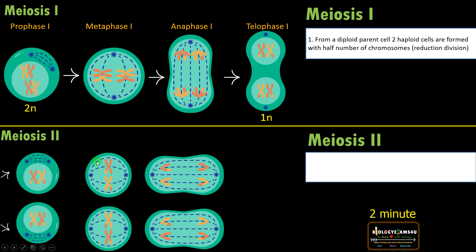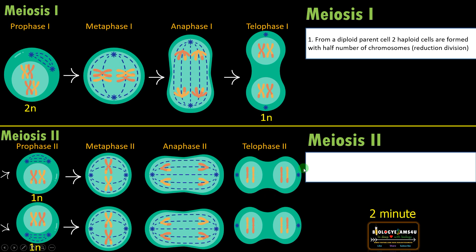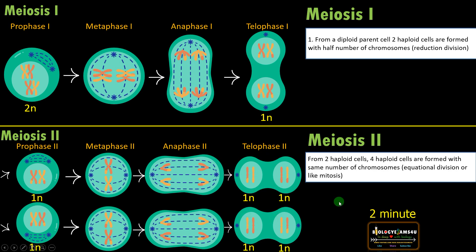Whereas in meiosis II, as you see here, from two haploid cells, at the end of telophase II after cytokinesis, four haploid cells are formed with the same number of chromosomes. That is why meiosis II is called equational division, or it is just like mitosis. The chromosome number of the parent cell and the daughter cell is the same, as in mitosis.